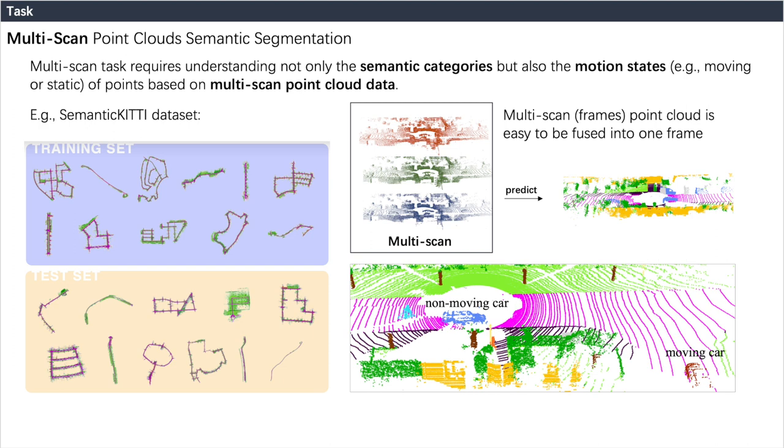We implemented multi-scan point cloud semantic segmentation on large outdoor datasets. This requires us to predict not only the semantic category of each point, but also the motion state of each point.